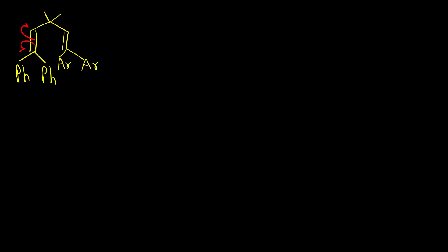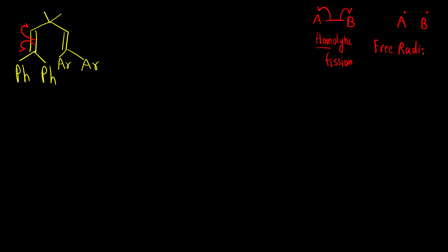This is the reactant given. In the first step, both the pi bonds will break homolytically. In a photochemical reaction, homolytic fission takes place. Homolytic fission means both atoms — let's say A and B forming the bond — each get one electron when the bond breaks, giving formation of free radicals. So the mechanism here is a free radical mechanism.